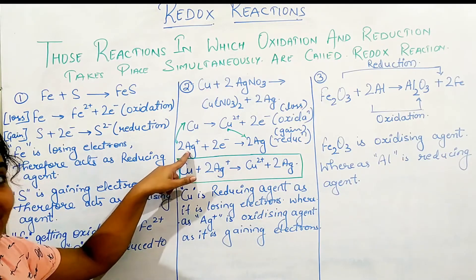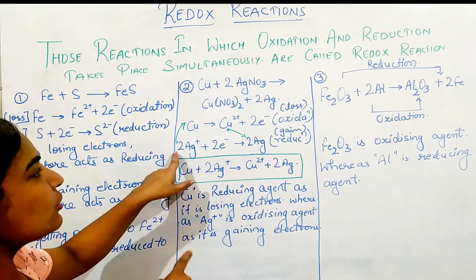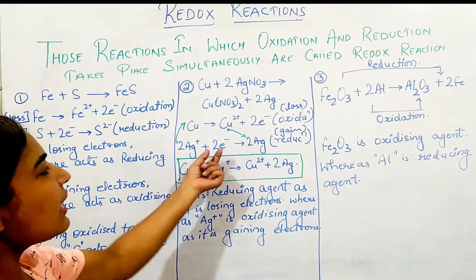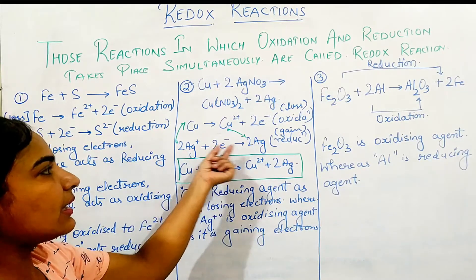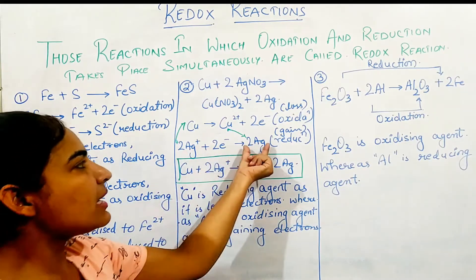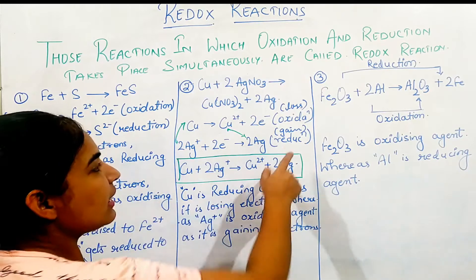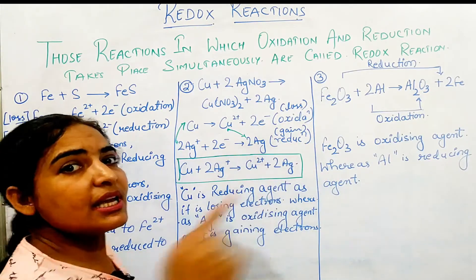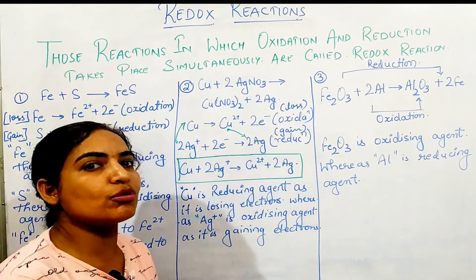Here, the second example involves silver — two atoms of silver — where electrons are gained. Two atoms of silver gain two electrons. This process is called reduction, where the gain of electrons occurs.